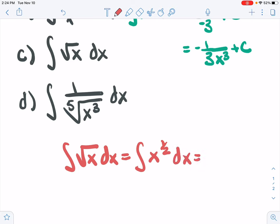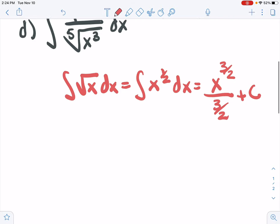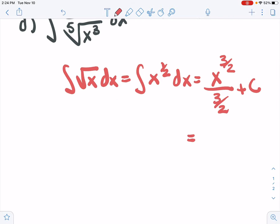1 half plus 1 is 3 halves. So we have x to the 3 halves divided by 3 halves plus C. And this would almost always rather be written as 2 thirds x to the 3 halves plus C.